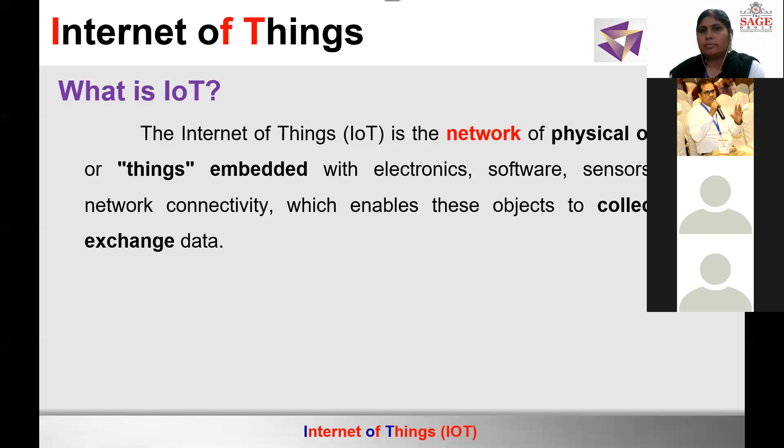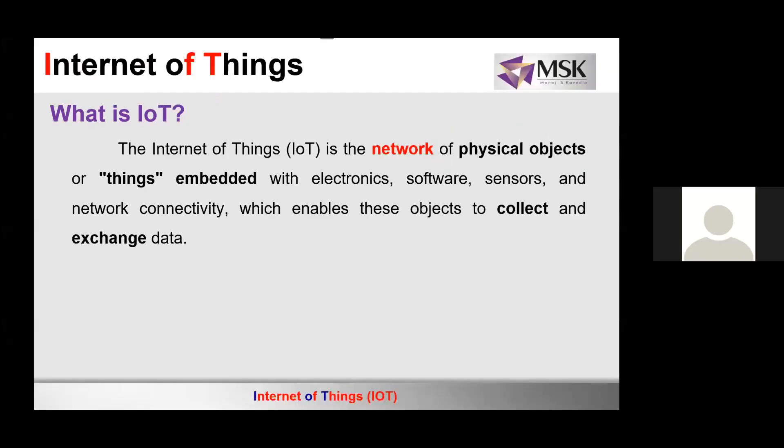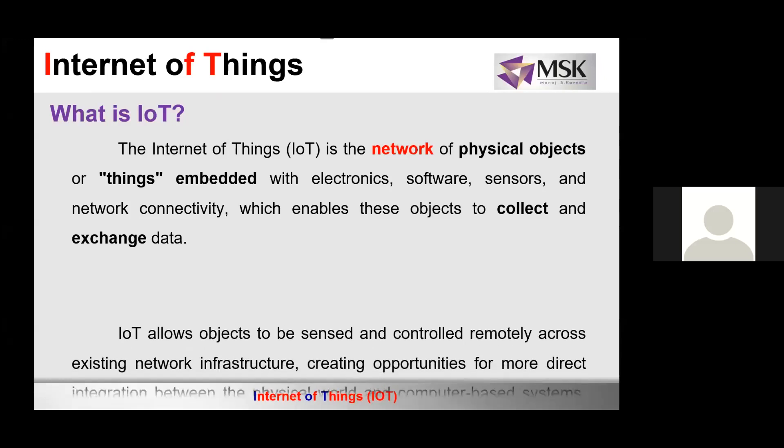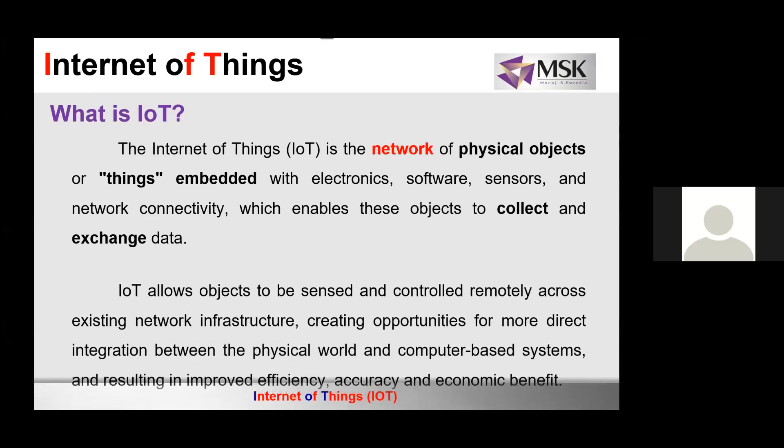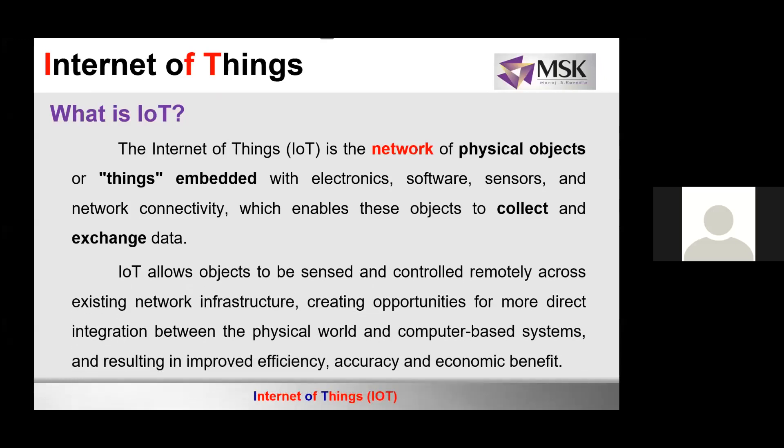Basically in IoT, at one end there is a sensor, and on the other end there are people. In between there is connectivity and processing. What it does is it allows you to sense the parameters and control them remotely from anywhere in the world.